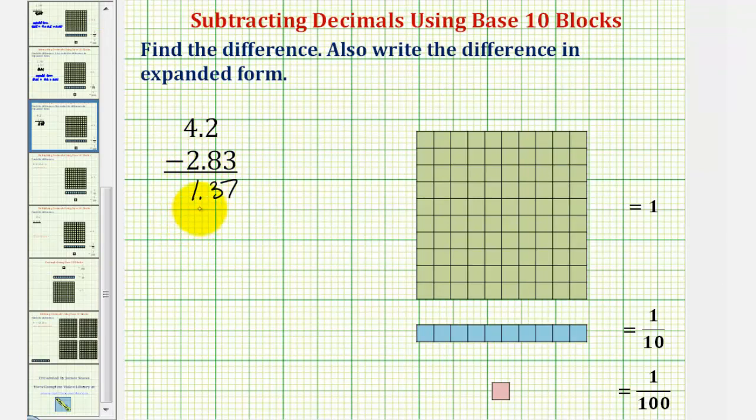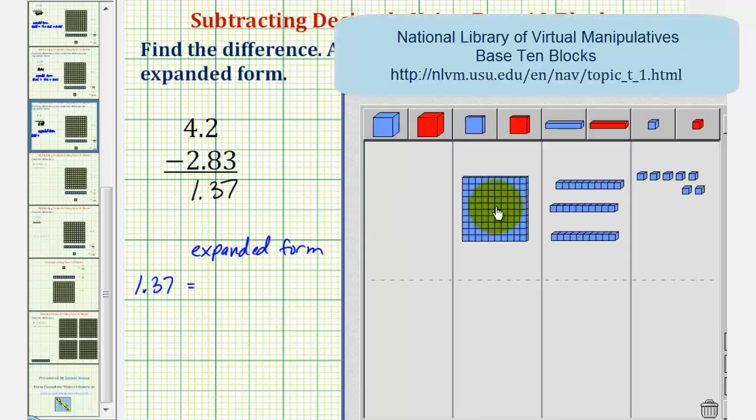We also want to write this in expanded form, which more closely resembles our answer using our base ten blocks. 1.37 in expanded form would be one for one flat, plus three tenths for three longs, plus seven hundredths for seven bits.